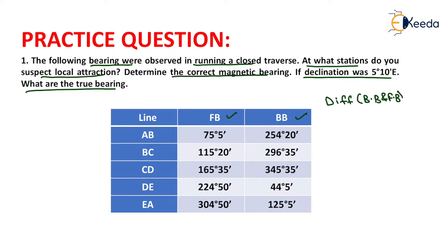From the difference of 254 degrees 20 minutes and 75 degrees 5 minutes, the difference is other than 180 degrees. So the stations are not free from local attraction because the difference is other than 180 degrees.